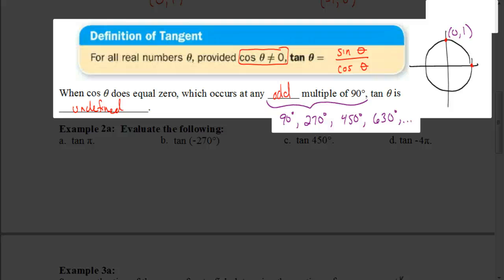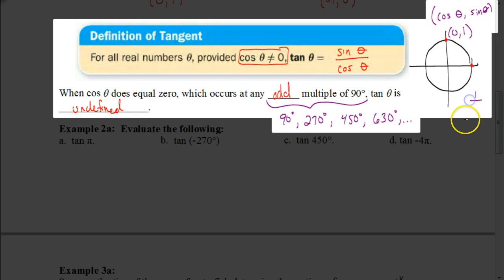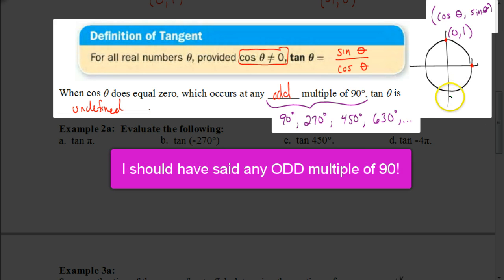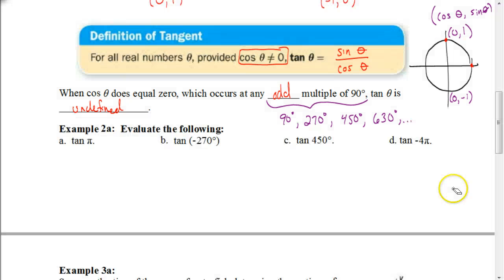Why is the tangent undefined at these angles? At 90 degrees, the cosine is 0 and the sine is 1, so we'd have 1 divided by 0, which is undefined. At 270 degrees, the coordinate is (0, negative 1), so the sine is negative 1 divided by cosine 0 — also impossible, so undefined. The tangent is undefined at any odd multiple of 90 because the x-coordinate, which is the cosine, equals 0 at those points.